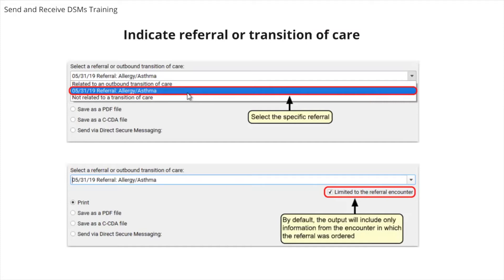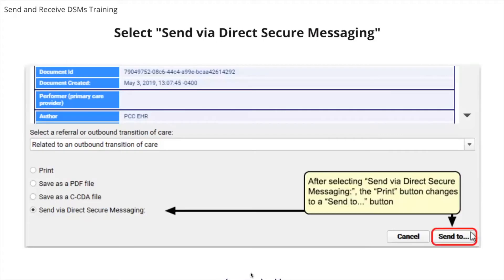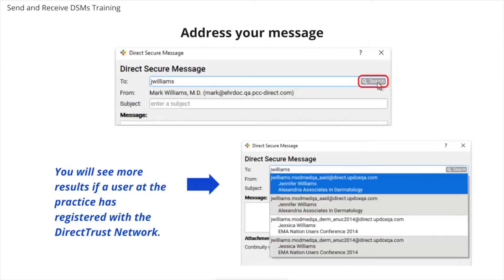If you select a specific referral encounter date from the drop-down menu, the summary of care record will be limited to procedures, orders, and vitals for that given date. Optionally, you can deselect the limited to the referral encounter checkbox, and the summary of care report will generate the patient's complete CCDA with all available patient information. Select the Send via Direct Secure Messaging radio button and then click the Send to button. Enter the healthcare provider's direct address, not their email address, in the To field. You may also search by provider or practice name. You will see more results here if a user at your practice is registered with the Direct Trust Network.